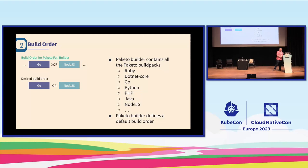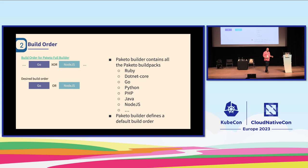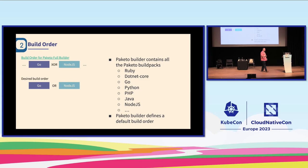The second way to customise, in order of complexity, is remixing the build order. The Paketo project has wide support for many language stacks — Ruby, Python, PHP — but by default their builder builds one language at a time. In my polyglot case I want to build a Go and TypeScript project simultaneously. Can we remix the build order of buildpacks? Yes, we can.